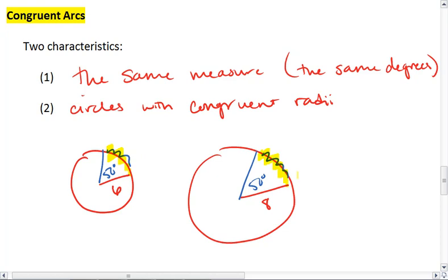This arc in the circle of 8 degrees is going to be larger than the arc in the circle that has a radius of—or sorry, the arc in the circle that has a radius of 8 is going to be larger than the arc in the circle with a radius of 6. So those are not congruent.